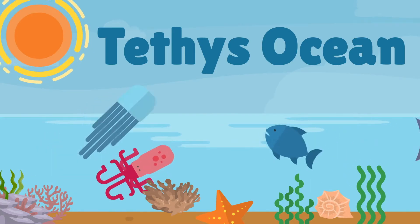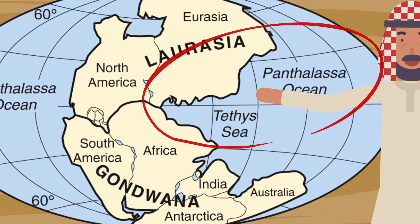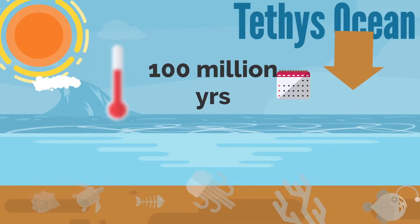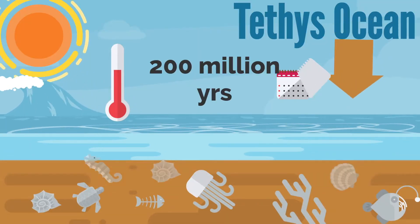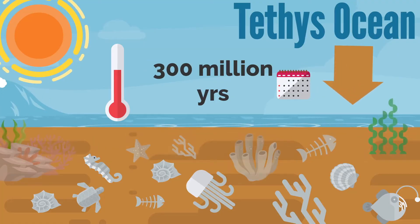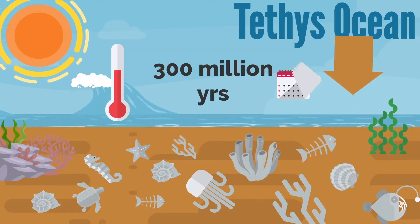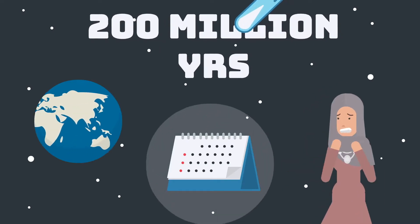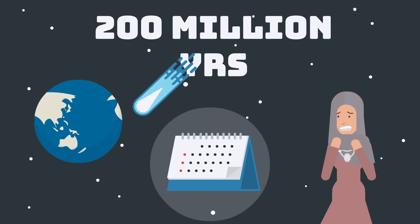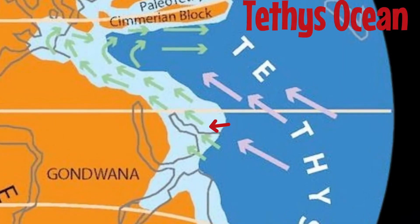The Tethys Ocean was rich with organisms and algae 250 million years ago, and it was right here when there was one supercontinent. Because this ocean was so rich with all these organisms, layers, pressure, and heat over millions of years caused oil to start forming.